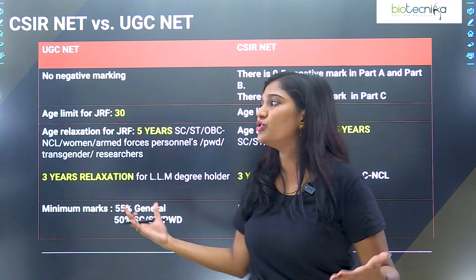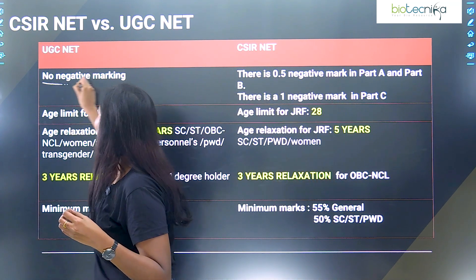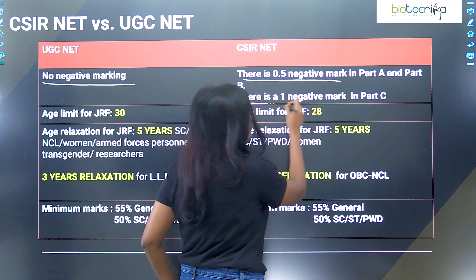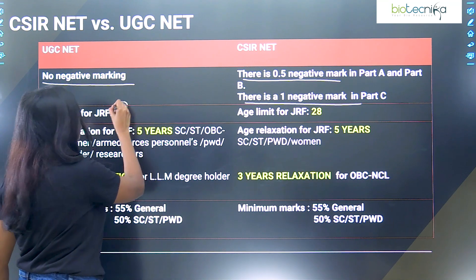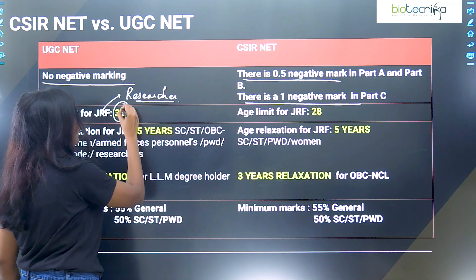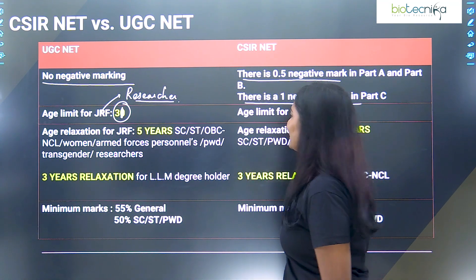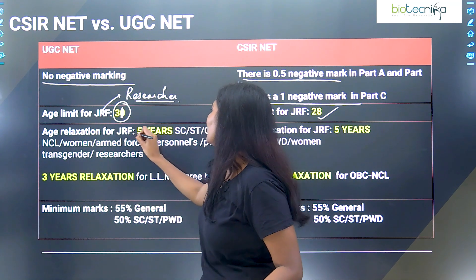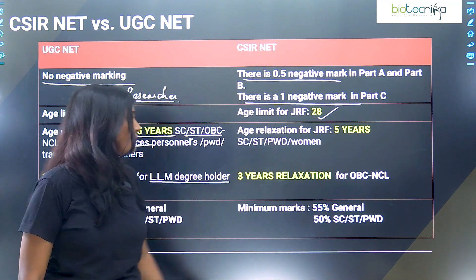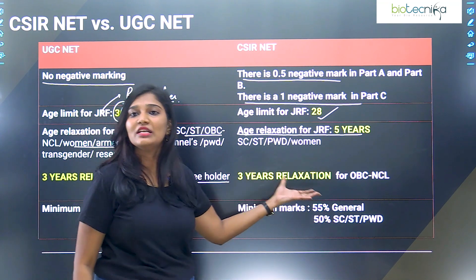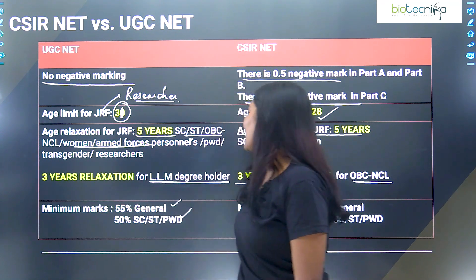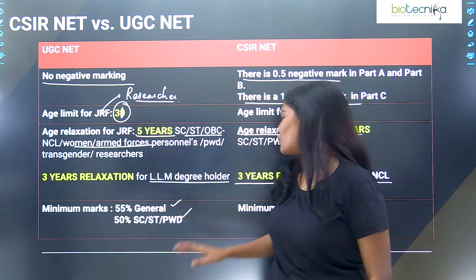Key differences: No negative marking in UGC NET, while CSIR NET has 0.5 negative marks in Part A and Part B and one mark negative in Part C. For age limit for JRF: UGC NET JRF age limit is 31 years, and CSIR NET JRF age limit is 28 years. Age relaxation is 5 years for reserved categories (SC/ST/PWD/women) and 3 years for OBC NCL. The minimum criteria is 55% marks for general category and 50% for other categories, with a 5% relaxation applicable.